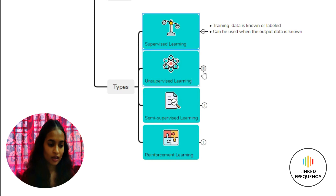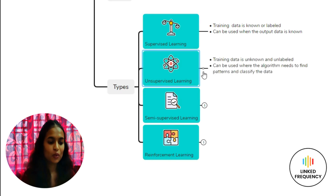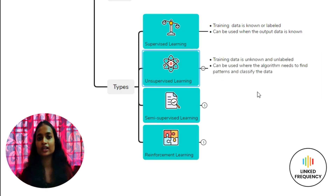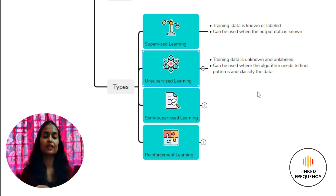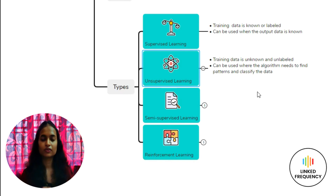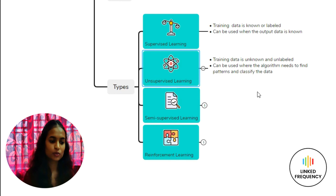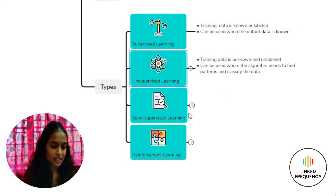The second type is Unsupervised Learning. Here the training dataset is completely unlabeled. The algorithm is allowed to understand the data, find patterns in it, and then classify the data according to the features it identifies. The machine segregates and classifies the data for you.